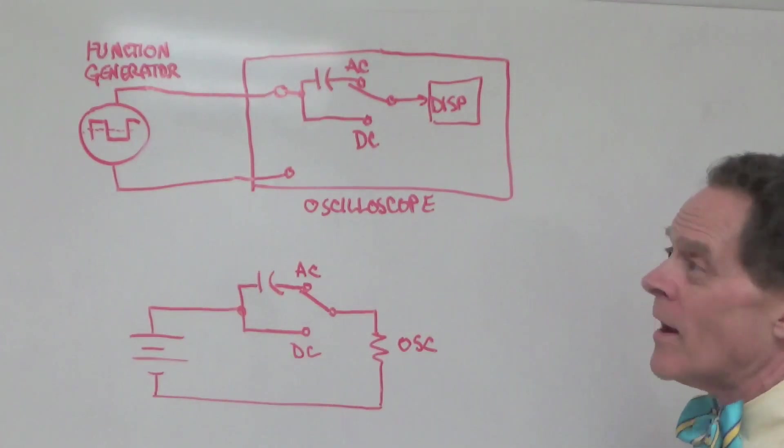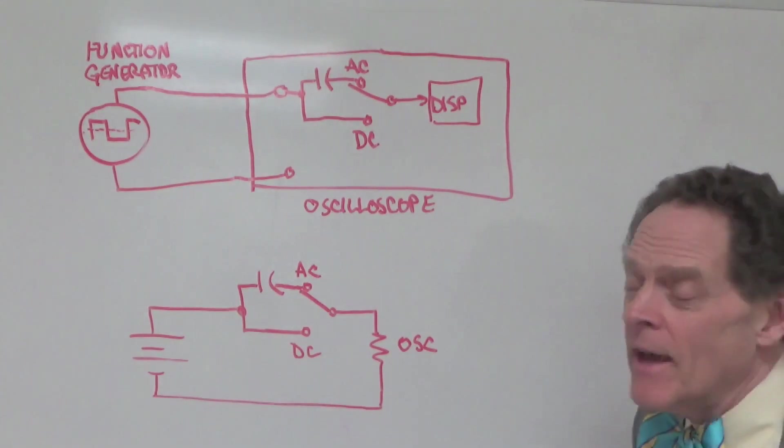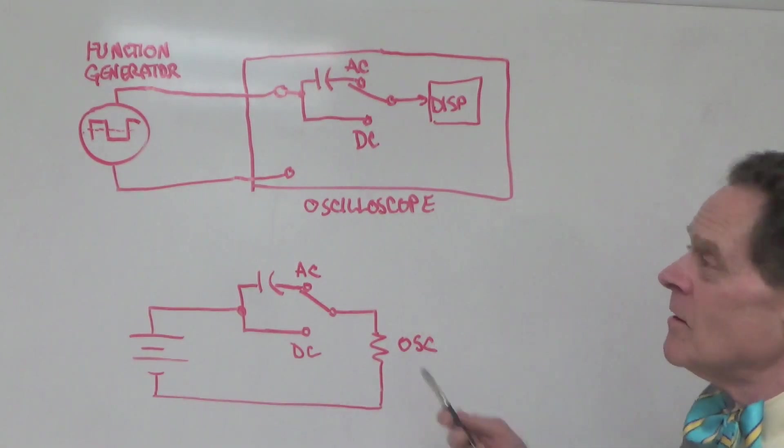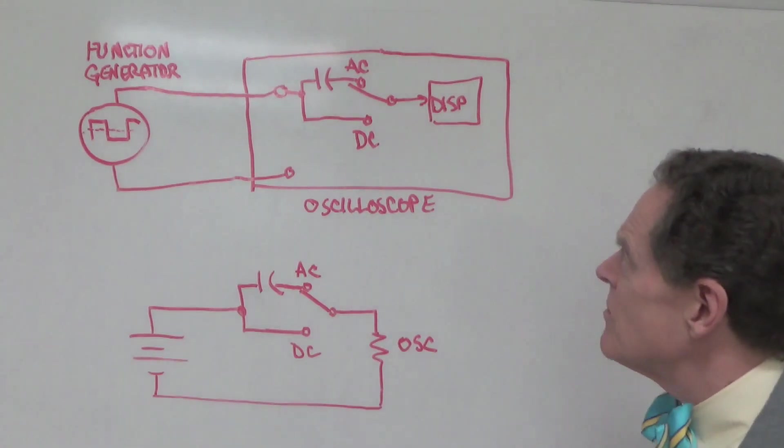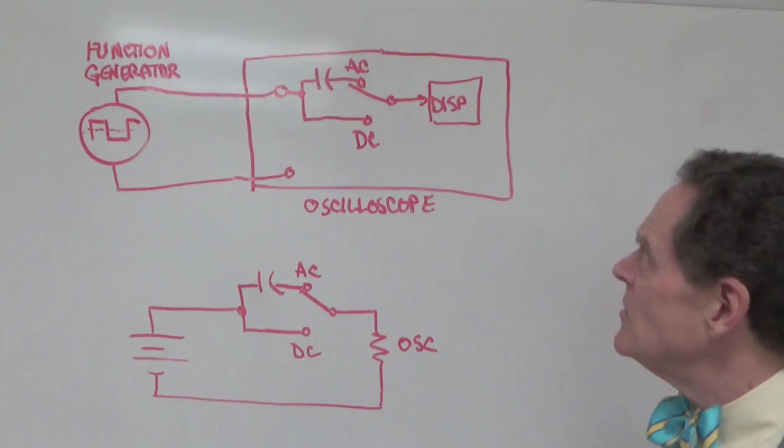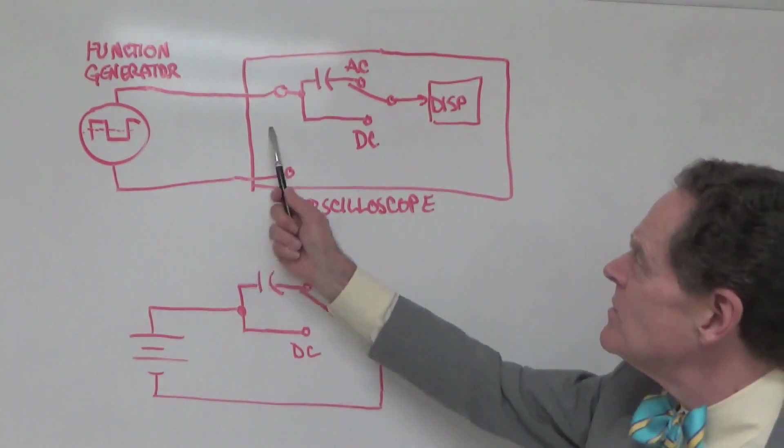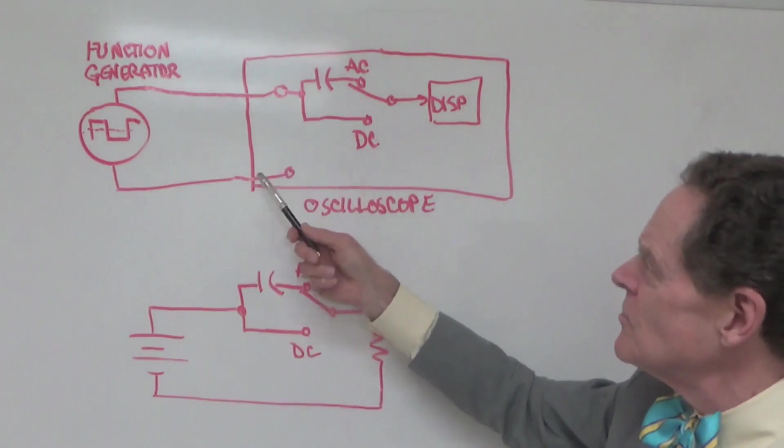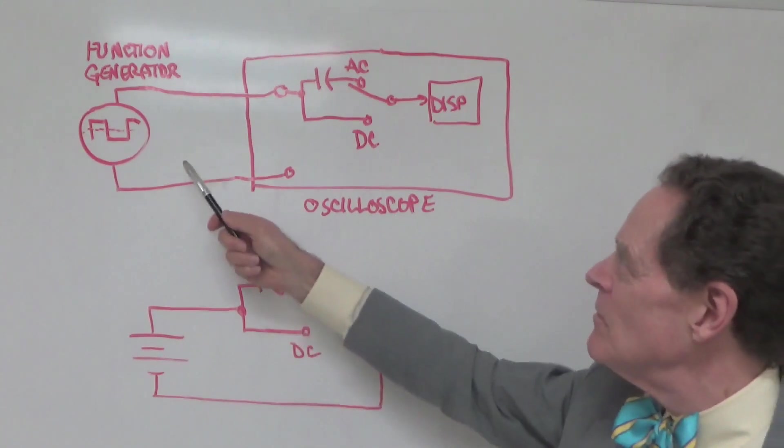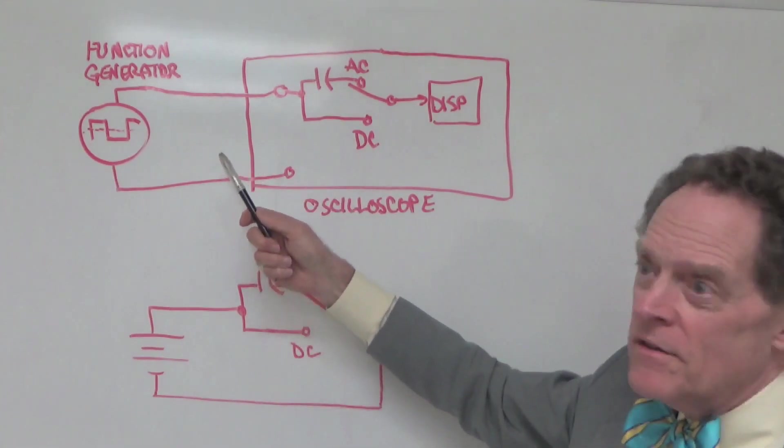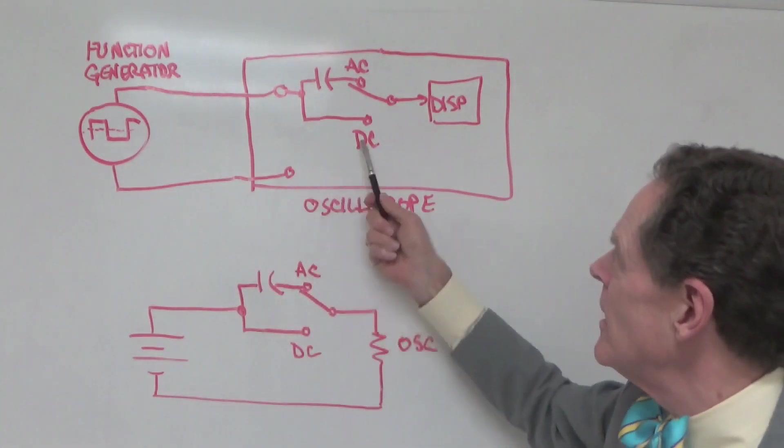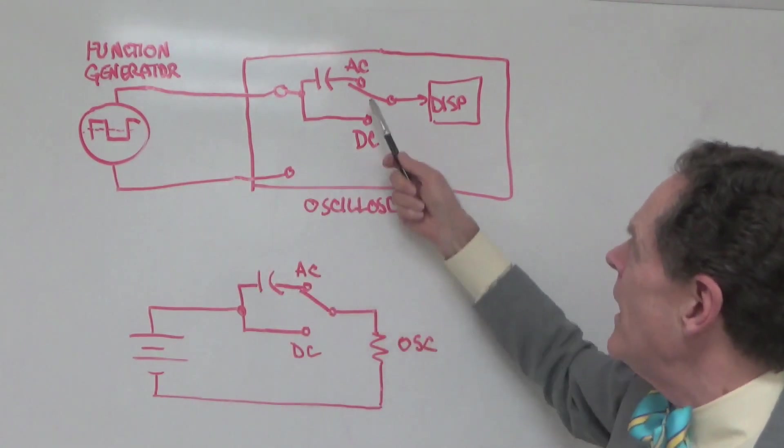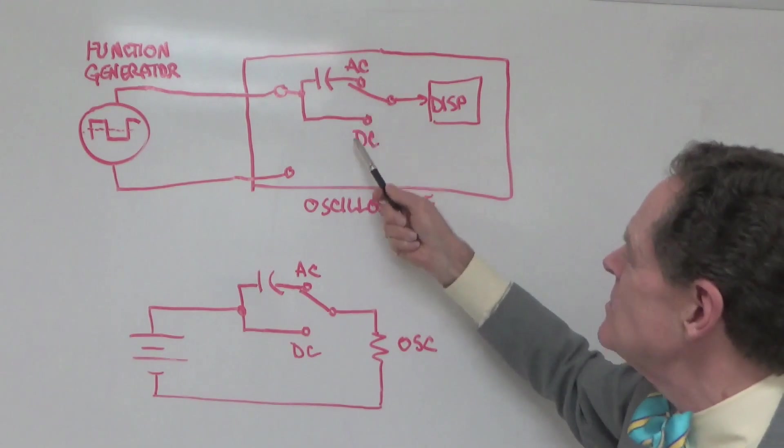Okay, so what I want to talk about right now is a little bit better explanation of what's actually going on with this AC coupling versus DC coupling. Let's think about, so what I've drawn here is a block diagram of what we had in the earlier parts of the video where we have a function generator connected to an oscilloscope and we're in the AC position.